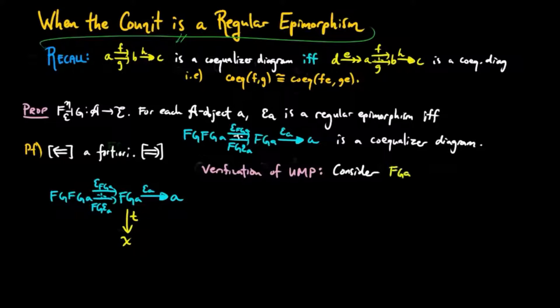So we consider a morphism T such that T epsilon FGA is equal to T FG epsilon A. Since epsilon A is a regular epimorphism, it is the co-equalizer of some morphisms F and G.